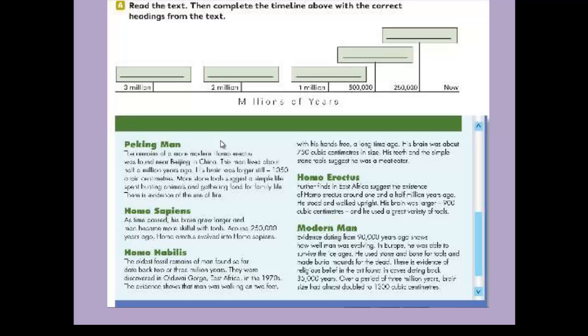Homo Habilis: The oldest fossil remains of man found so far date back to two or three million years. They were discovered in Olduvai Gorge, East Africa in the 1970s. The evidence shows that man was walking on two feet with his hands freed a long time ago. His brain was about 750 cubic centimeters in size. His teeth and the simple stone tools suggest he was a meat-eater.